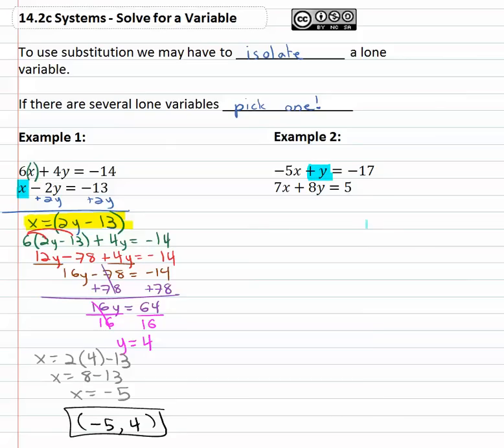We see the y almost all alone. To get it alone, we have to get rid of the negative five x by adding five x to both sides of the equation. When we do, we now have y equals five x minus seventeen.